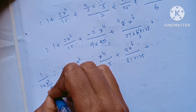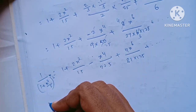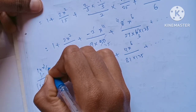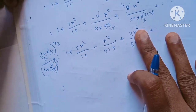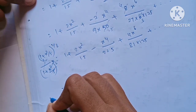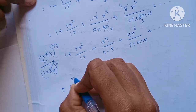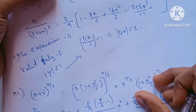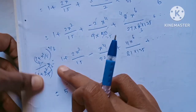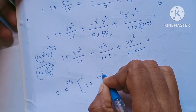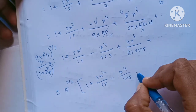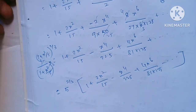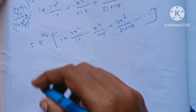After cancellation and simplification, the expansion of (5+x²)^(2/3) gives 5^(2/3) times [1 + 2x²/15 - x⁴/225 + 4x⁶/(81 × 125)]. This is the final answer for the third question.